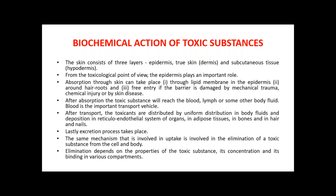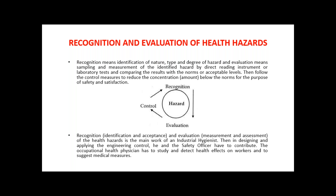We have already discussed the different effects due to routes of entry — that may be dermal, causing dermatitis, which is a disease related to the skin. We must go for recognition and evaluation of these health hazards. We must first identify what exactly the toxic chemical is, its concentration, and its effects. Then we must identify the maximum permissible limit, evaluate and test these chemicals, and finally think about how to control them in the working environment.